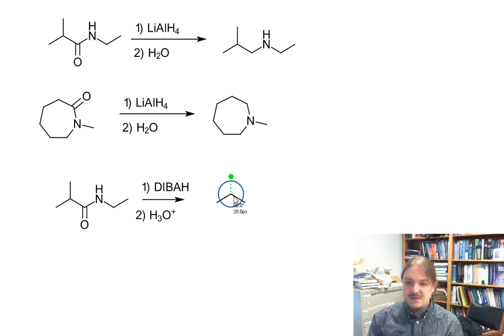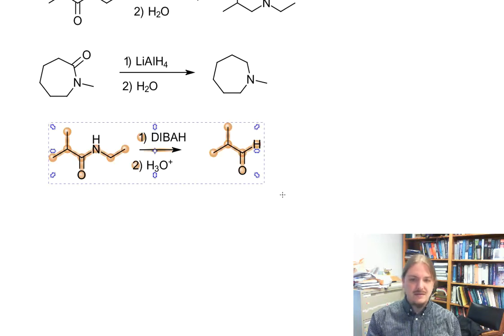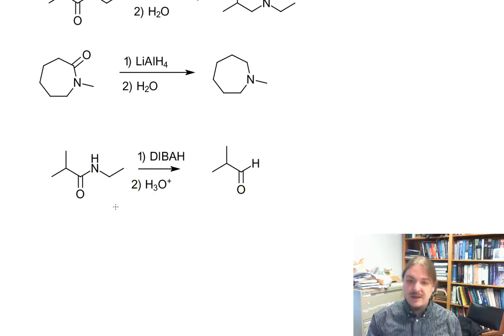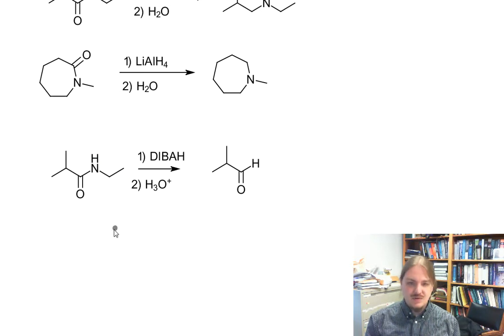And this behaves similarly to the reduction of esters to aldehydes in that the first step is an electrophilic reaction where the amide is a nucleophile, and it forms an intermediate that is generally a little bit more stable under these conditions. And so it can undergo acidic hydrolysis. And I'm going to draw the structure of that intermediate, but you can go back and watch the ester video to figure out where this comes from and where it goes.